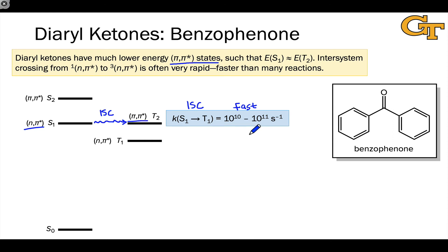Even diffusion controlled photochemical reactions are going to be something like 10^9 per second. And so it's going to be very hard to get reaction out of S1 prior to conversion to a triplet because intersystem crossing is relatively fast.